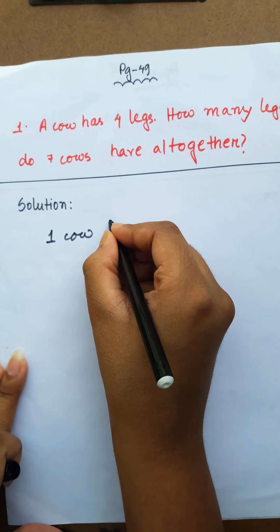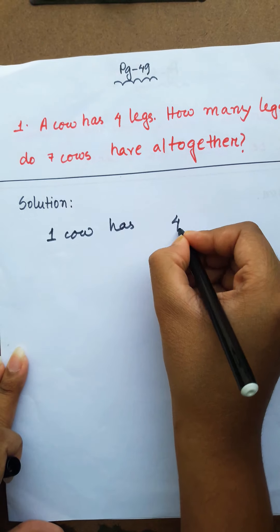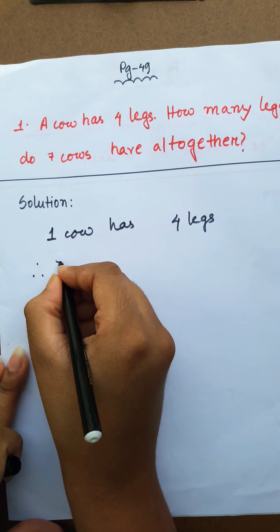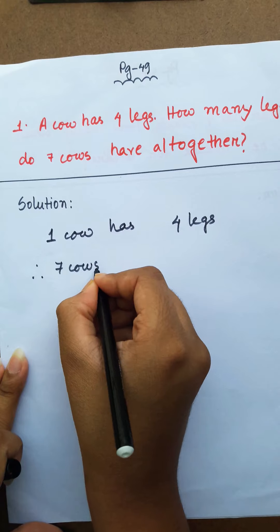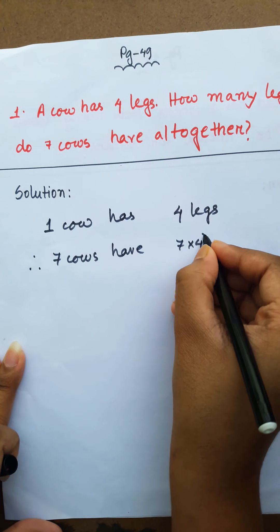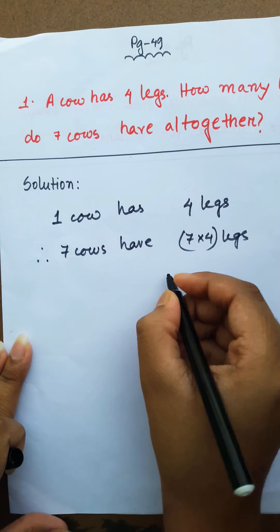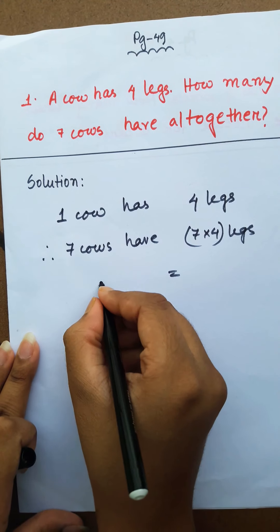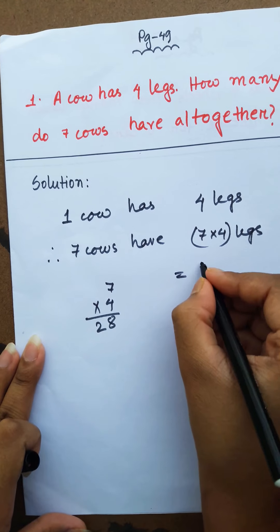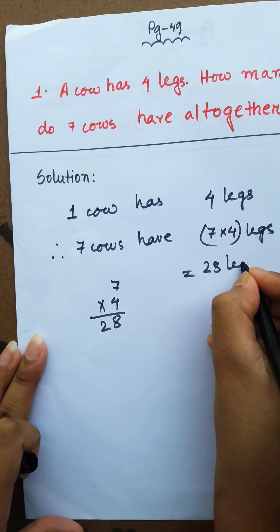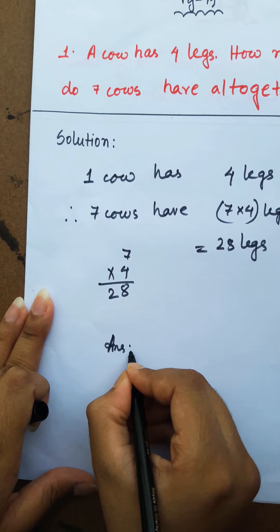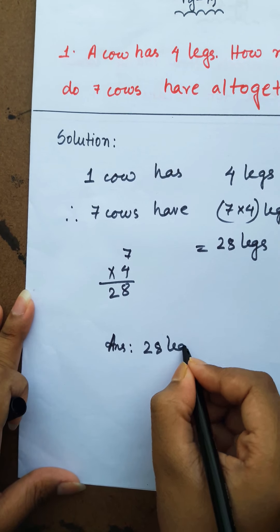1 cow has 4 legs. Therefore, 7 cows have 7 into 4 legs. 7 into 4 is 28. So the answer is 28 legs.